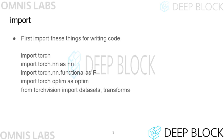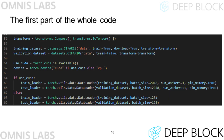First, to use PyTorch, you need to import several modules. Write the following code in your code file. Let me show you the data preprocessing code first. Add the following code below the part importing the module. The full code is also available on the course page.